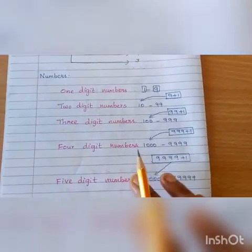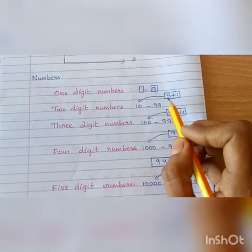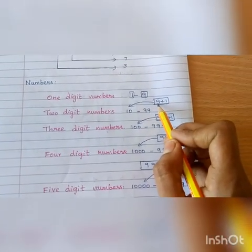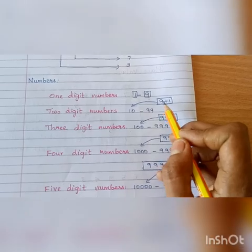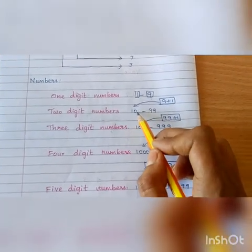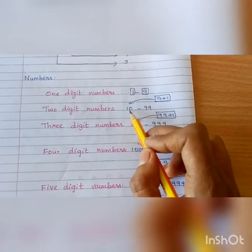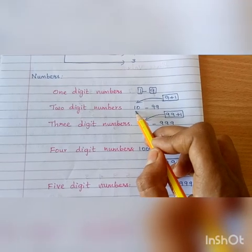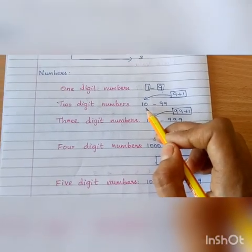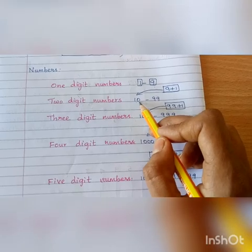Now, I am just adding 1 to the greatest one-digit number. So, 9 plus 1 is obviously 10. How many digits are there in this? 2 digits. So, this is called a 2-digit number.